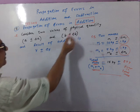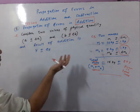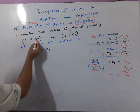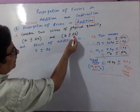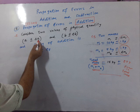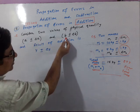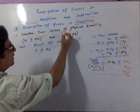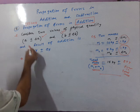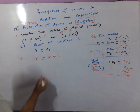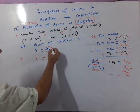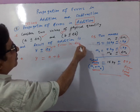Consider two values of a physical quantity: first value A plus-minus delta A, where delta A is error in A, and second value B plus-minus delta B, where delta B is error in B. When you add these two values, the result is called Y, so Y equals A plus B. Since A has some error and B has some error, the result of addition will also have some error, called delta Y — the error in the result of addition.